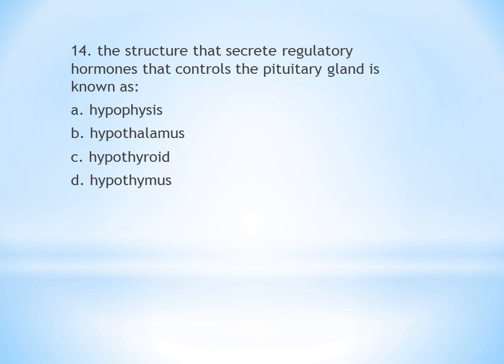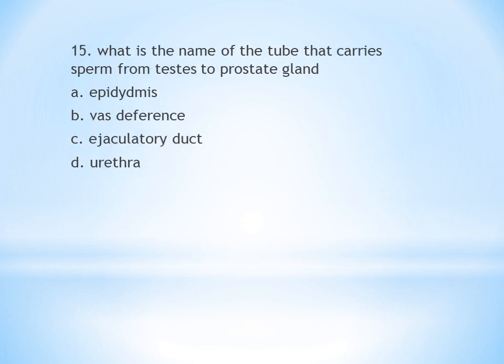Which organ produces bile? A. Gallbladder. B. Kidney. C. Pancreas. D. Liver. Bile is produced by the liver. Next question: What is the name of the tube that carries sperm from the testes to the prostate gland? A. Epididymis. B. Vas deferens. C. Ejaculatory duct. D. Urethra. The tube-like structure from testes to prostate gland is the vas deferens.